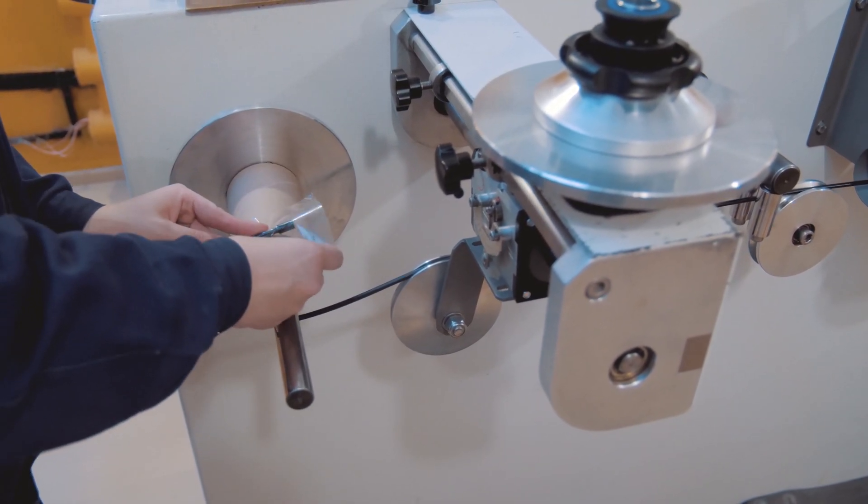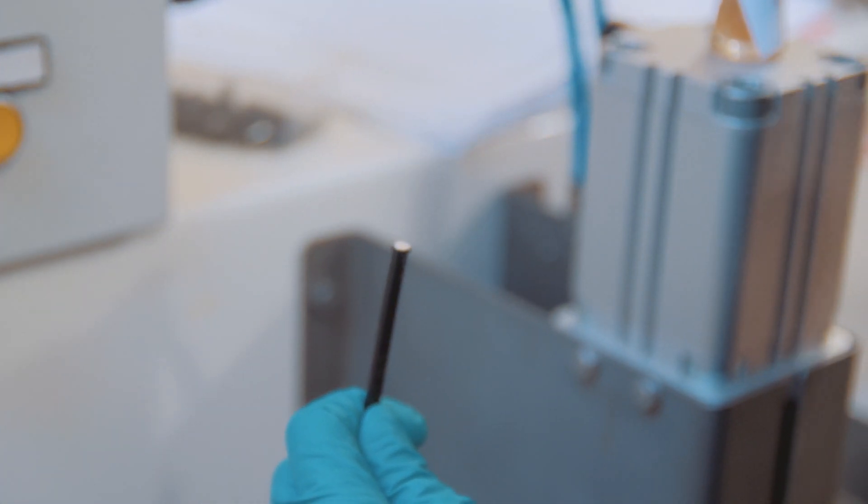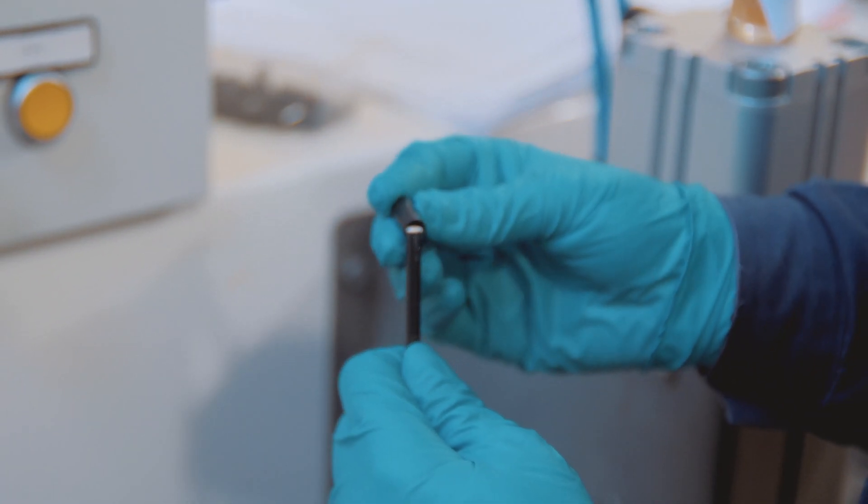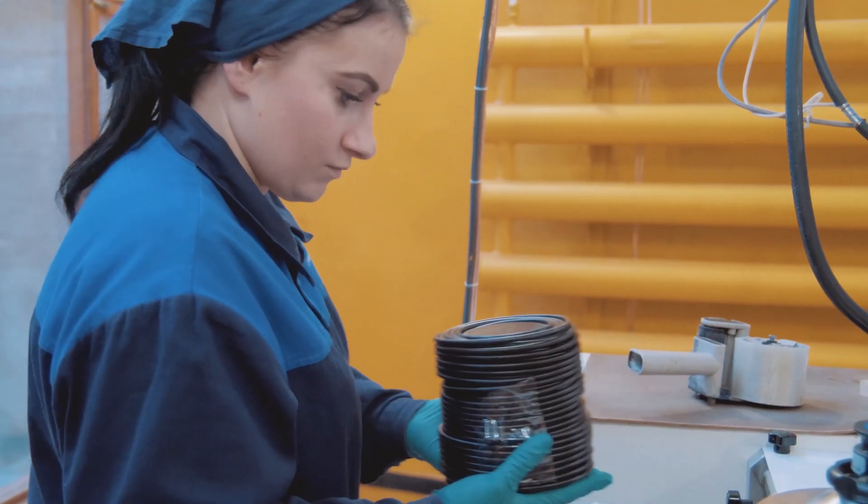After quality control, the detonating cord is cut to length, wound into coils and labeled. The ends of the detonating cord of each coil are kept to protect from external influences.